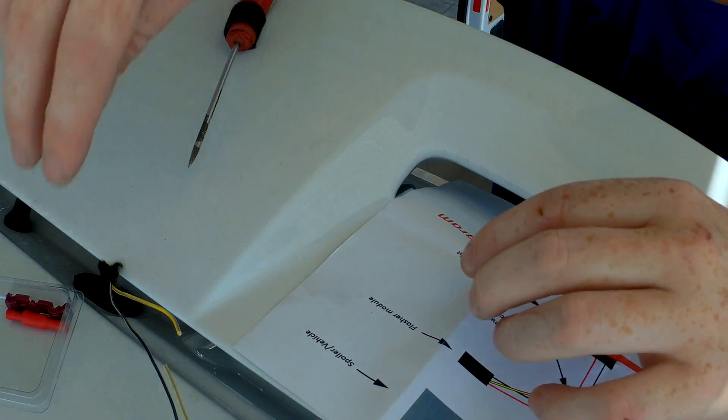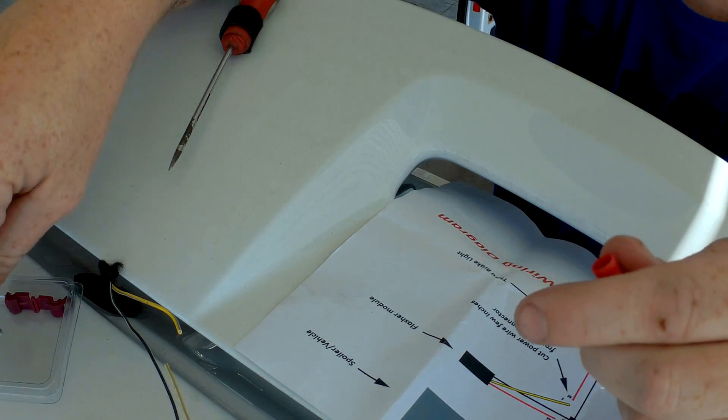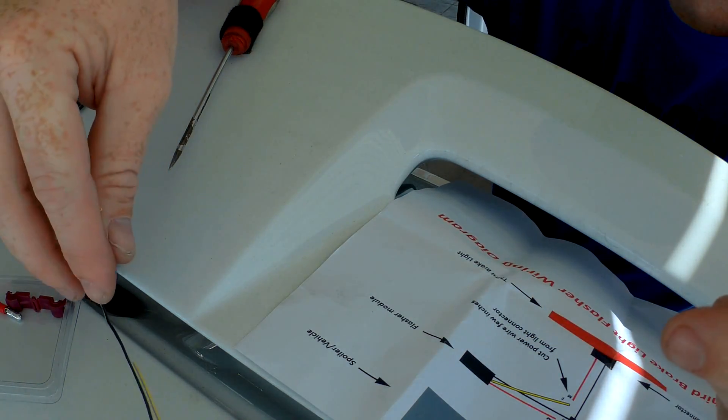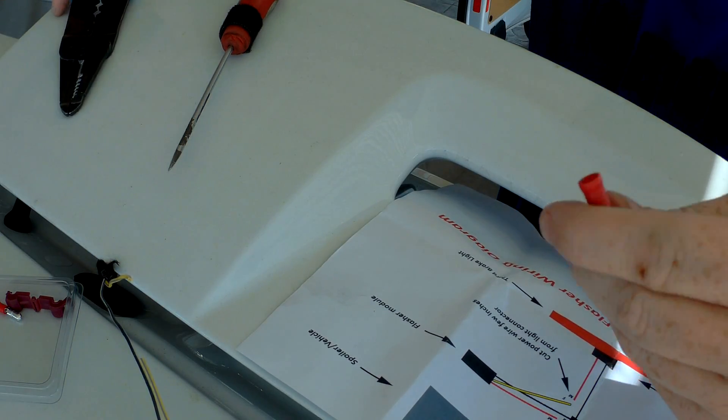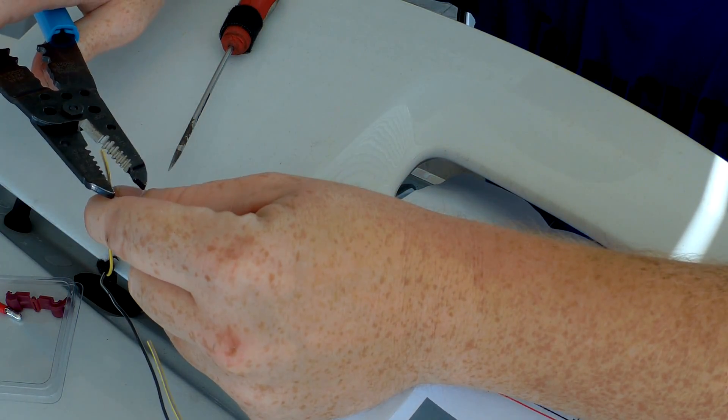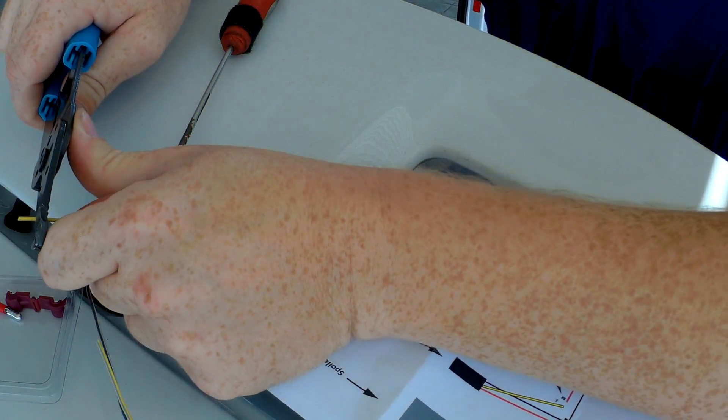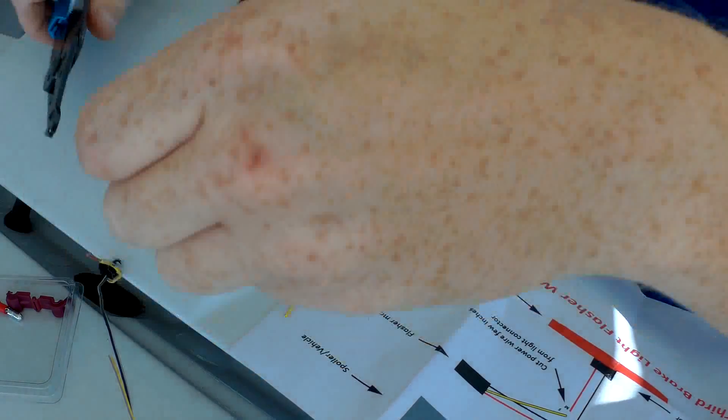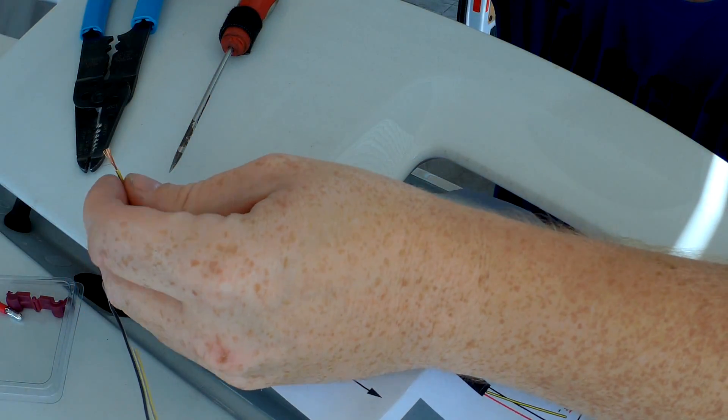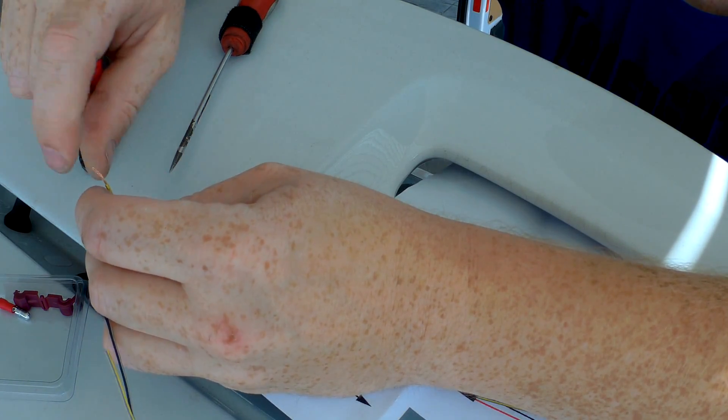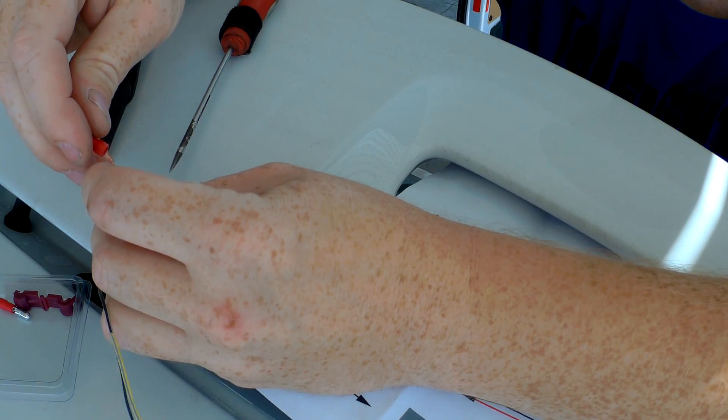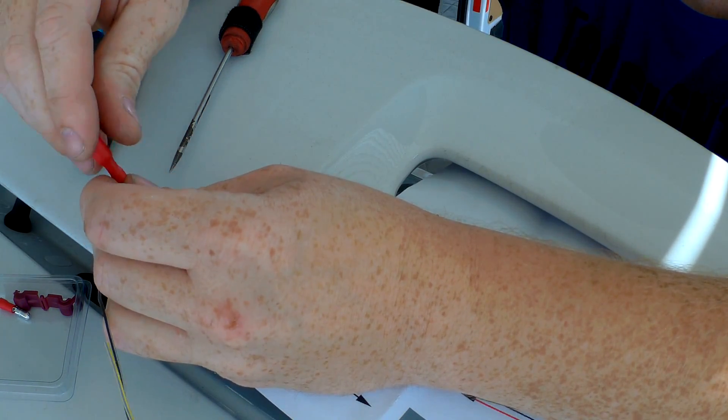Alright, so we need to have the female side coming from the car, right here. It needs to have a female so we're going to strip this guy down. Strip her down. It's a little large connection for what we need but it will do. I'm going to throw it inside here.